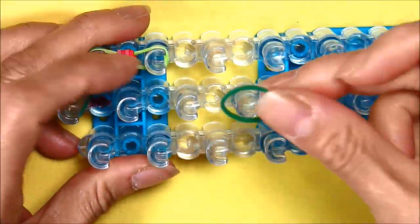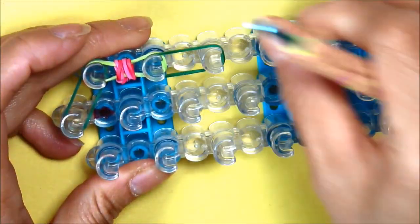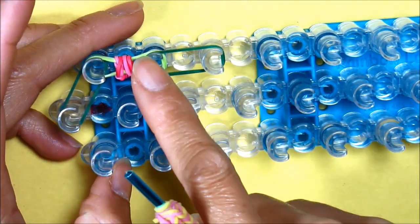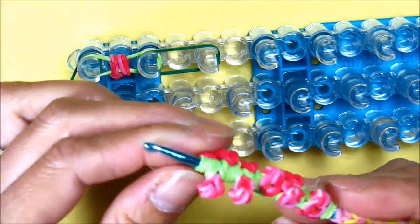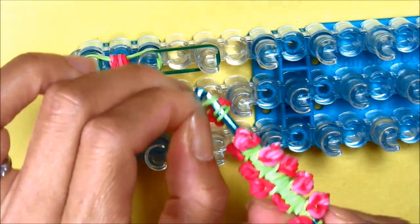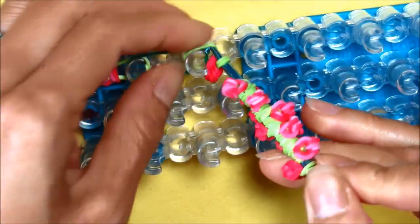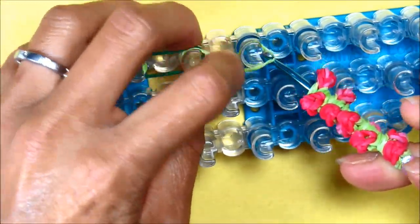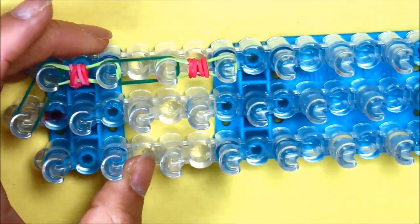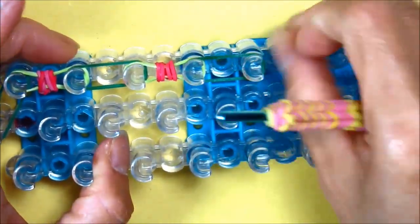And attaching it to our bracelet like that. Once again, take your single green, putting it from the next peg down, and now attaching your rosebud on the loom. Just keep going in that order.